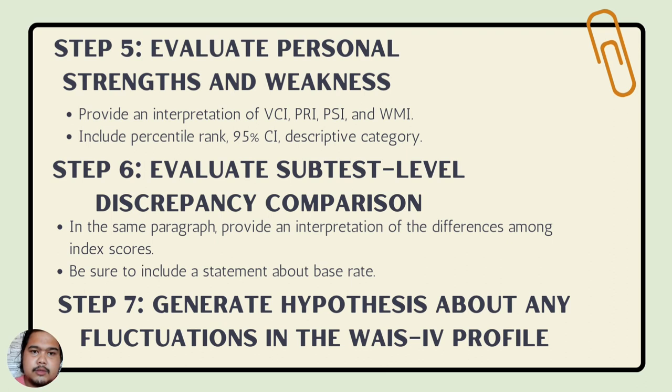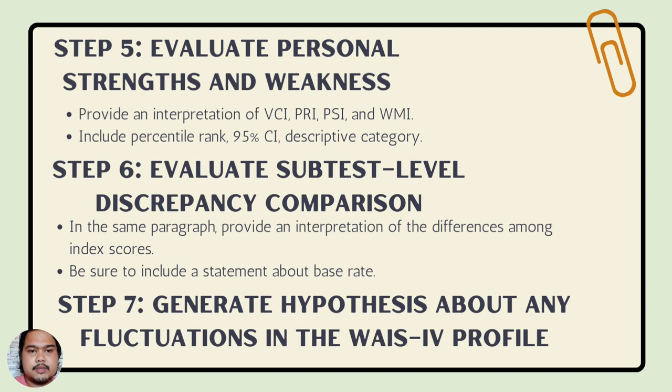Step 5: Evaluate personal strengths and weaknesses. Provide an interpretation of the VCI, PRI, PSI, and WMI — the Verbal Comprehension Index, Perceptual Reasoning Index, Processing Speed Index, and Working Memory Index. Again include the percentile rank, 95% confidence interval, and descriptive category.